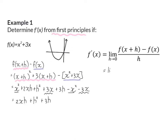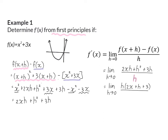We are going to calculate the limit as h approaches 0. Our numerator is now 2xh plus h squared plus 3h, and this has to be divided by h. To calculate a limit we would want to substitute h with 0, but we cannot do that yet because then we'll have a 0 in the denominator. This means we'll first have to simplify by factorizing the numerator and taking out h as a common factor. Then we can say h divided by h is 1.